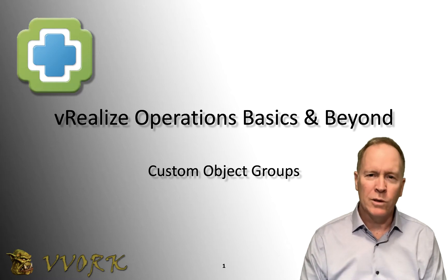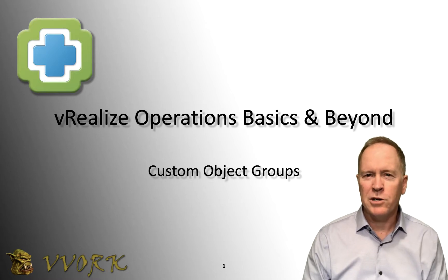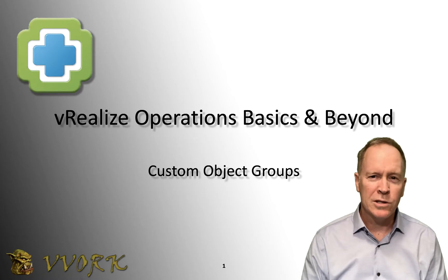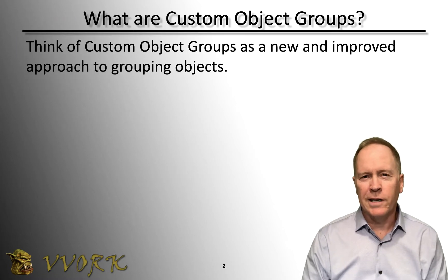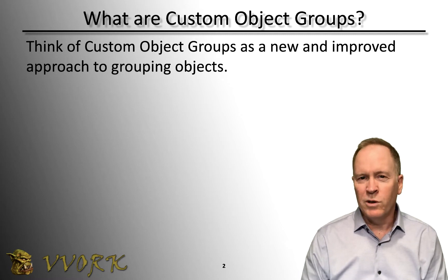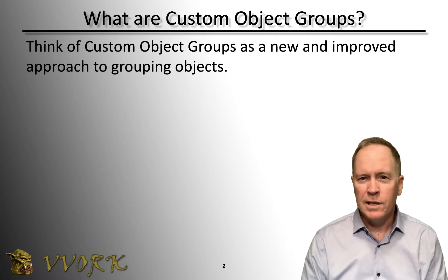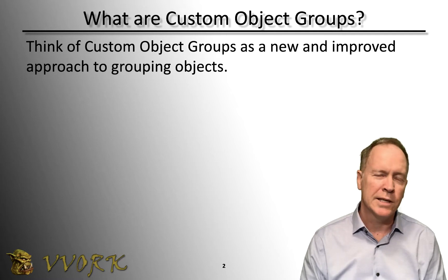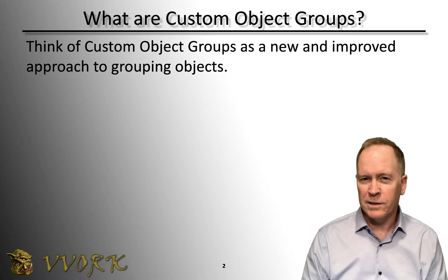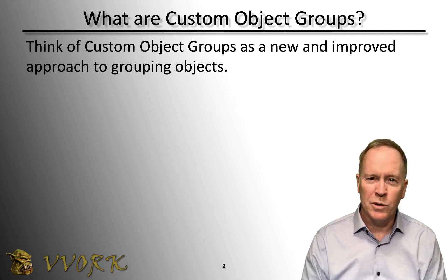What are they? What do they do? How do you use them? Additionally, we're going to show a demonstration that uses custom object groups that make use of something called relationships. Custom object groups are a new and improved way of grouping objects in VRI's operations. We know from previous videos that there are four different grouping mechanisms: tagging, application groups, custom data centers, and now custom object groups.